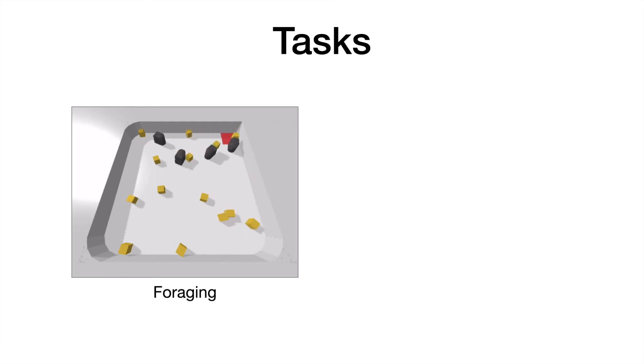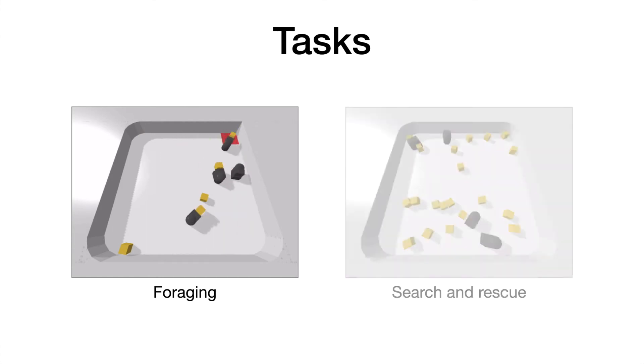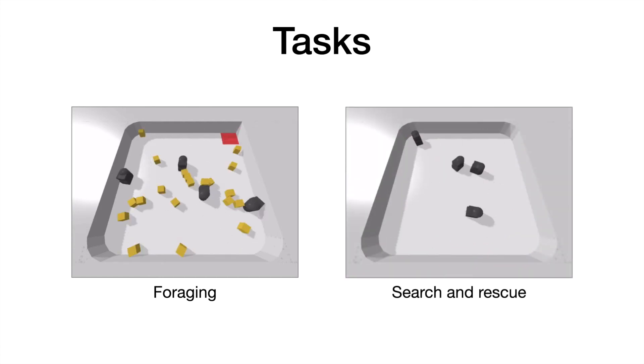We study the use of spatial intention maps on two tasks. The first is the foraging task, where the goal is to move all objects to the red receptacle in the top right corner. We look at several robot types with different foraging capabilities. The ones shown here are lifting robots, which can pick up objects and carry them. The second task is search and rescue, where the goal is to find all objects in the environment and rescue them.